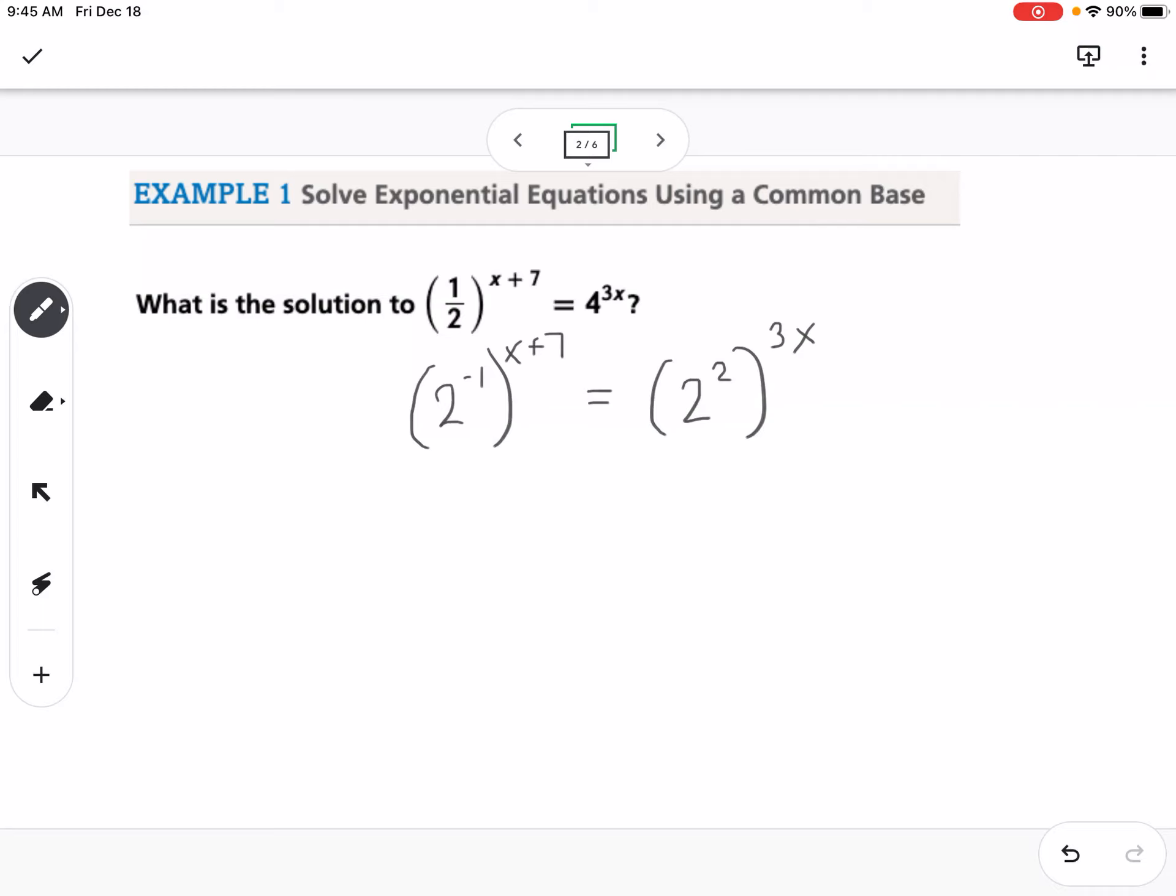Now our properties of exponents are, if we have a power to a power, we multiply. So that would be 2 to the negative x minus 7 equals 2 to the 6x.